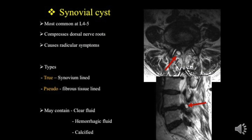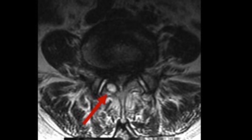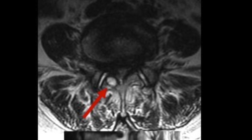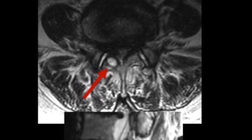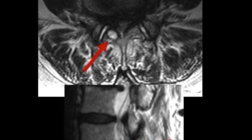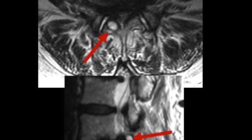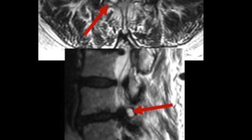Facet joints have no capsule anteriorly, so the synovium extends posterior to the ligamentum flavum. When there is degeneration of the ligamentum flavum, there is distension of this space leading to formation of a cyst. These cysts are commonly seen at the L4-L5 level and cause compression of the dorsal nerve roots leading to radicular symptoms. They can be true cysts if synovium-lined, or pseudo-cysts, and may contain clear fluid, hemorrhagic fluid, or calcified fluid.